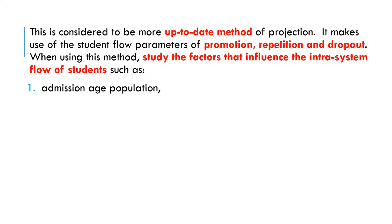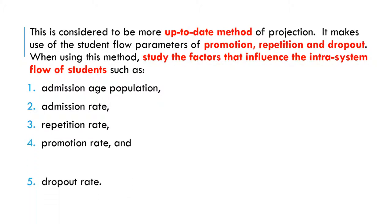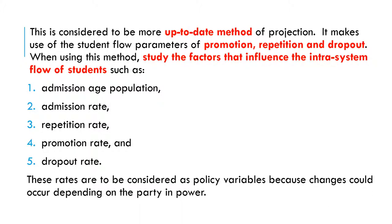When using these methods, we study the factors that influence the intra-system flow of students. These include: admission age population, admission rates, repetition rates, promotion rates, and dropout rates. These are the factors that influence the student flow within the system. They are considered policy variables because changes occur depending on the party in power.